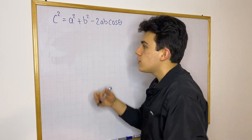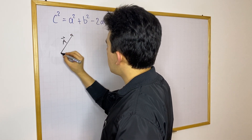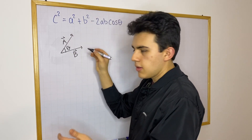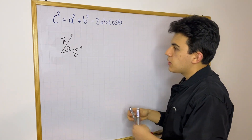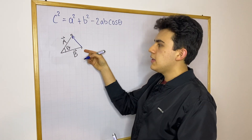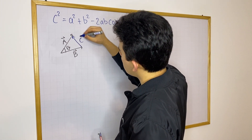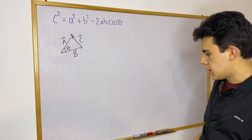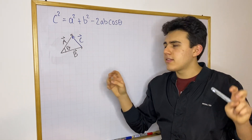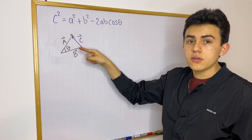Say you have two vectors — I'm going to call one of them A, and say you also have B, and the angle between them is going to be theta. Then we can say that there's going to be a third vector, which will go from B's head all the way to the other head of A, and I'm going to call this vector C, just to keep up with the A, B, C notation. I want to show you that even though these legs are vectors, the law of cosines still holds for the magnitudes of these vectors.